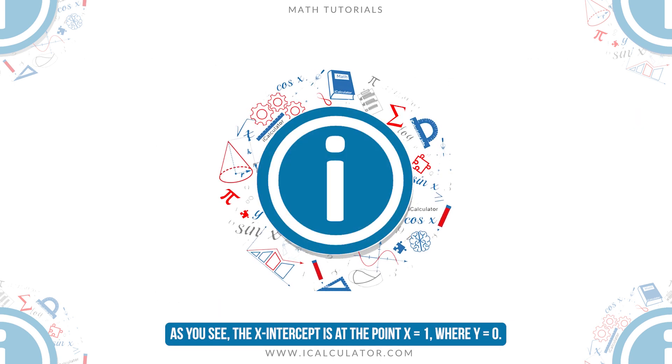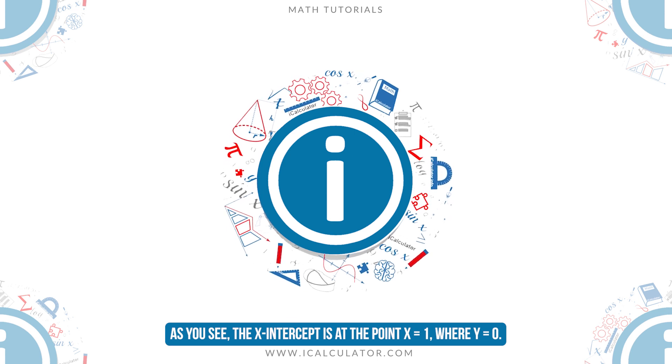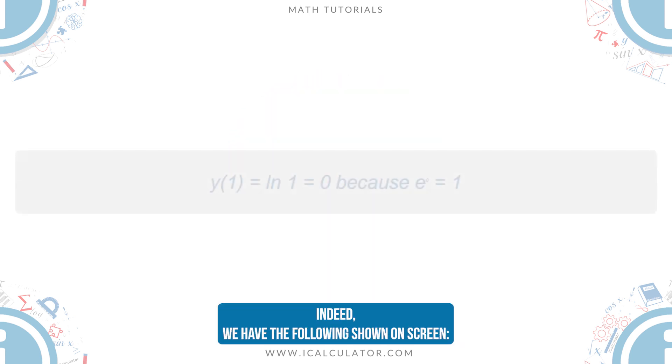As you see, the x-intercept is at the point x equals 1, where y equals 0.